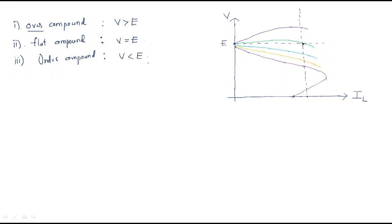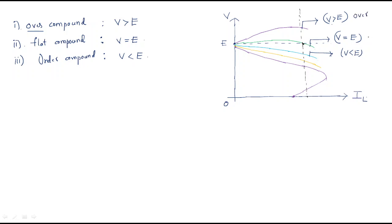On the characteristics curve, the x-axis is the load current IL. For the flat compound generator, V equals E — the induced EMF and load voltage are approximately the same as load current increases. For the over compound generator, as load current increases the voltage is high, so V is greater than E. For the under compound generator, V is less than E.